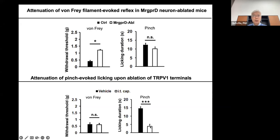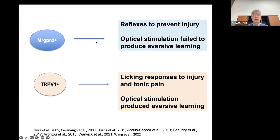We recaptured what David and Alan found: MRGD neurons are necessary for withdrawal response to von Frey filament stimulation, while TRPV1 neurons are dispensable for this reflex behavior. But when we used the pinch assay — which evokes tonic pain in humans and lasting licking response in animals — this licking response was independent of MRGD neurons but dependent on TRPV1-positive neurons. Later work showed that pinch causes tissue injury with reactive oxygen species activating chemoreceptors including TRPA1 channels, sensitizing those TRPV1-positive nociceptors. Optogenetic studies by Richard Koerber, Philippa Bhatt, and Yan Zhang showed that MRGD neurons in acute conditions cannot produce aversion, while TRPV1 neurons can.